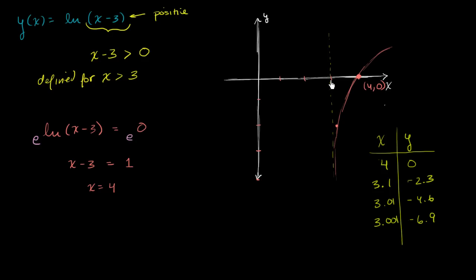Absolutely. As we approach 3 from values larger than 3, from the right-hand side, our function is plummeting down. It's unbounded. Our value of our function is quickly approaching negative infinity. So we clearly have a vertical asymptote at x equals 3.